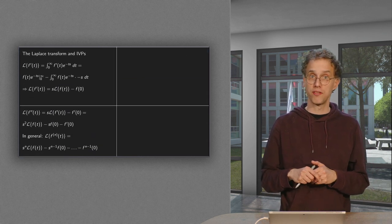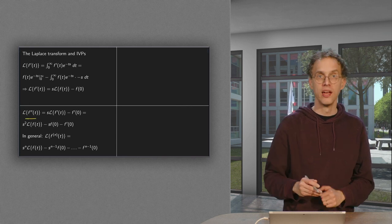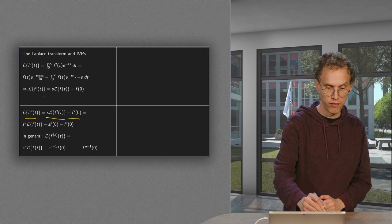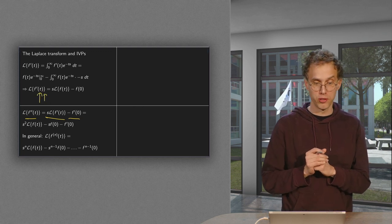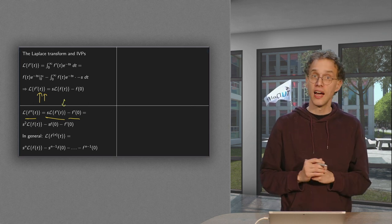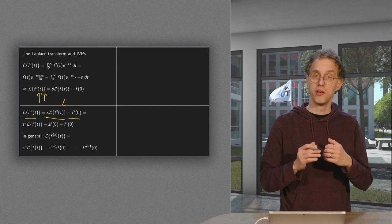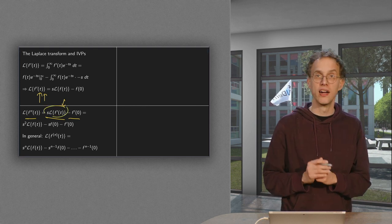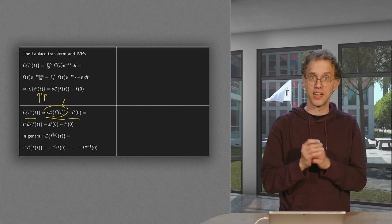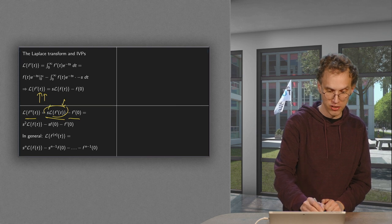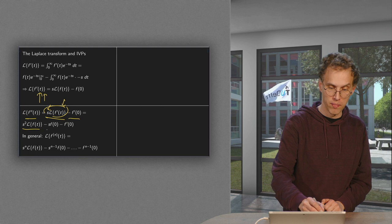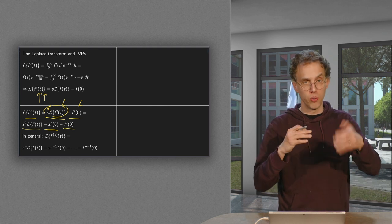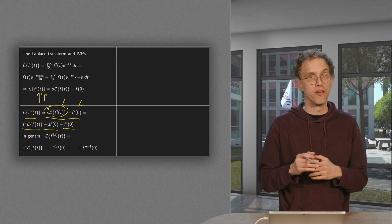So what happens if you do this for a higher derivative, say f double prime? If you apply this formula to f double prime, you get s times the Laplace transform of f prime minus f prime(0). Then you can again apply the formula for f prime in order to simplify that term. You get s times the Laplace transform of f minus f(0), so the additional factor s gives you s squared times the Laplace transform of f minus s times f(0), minus f prime(0), which was still there. In this way you can go on and take the Laplace transform of any derivative.